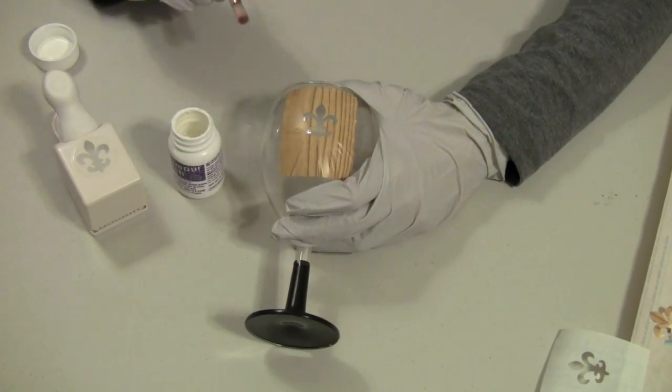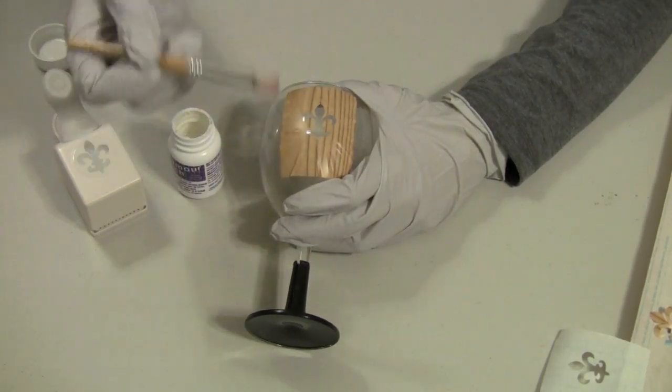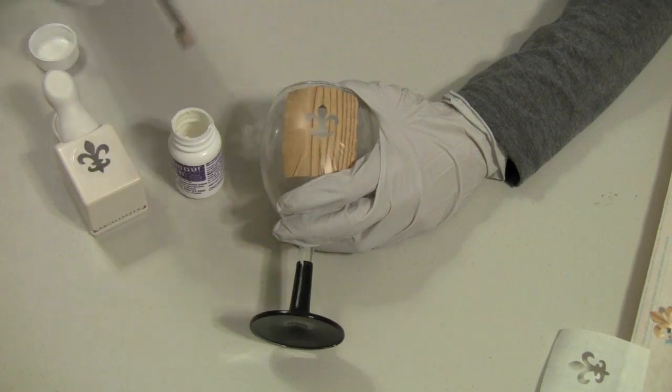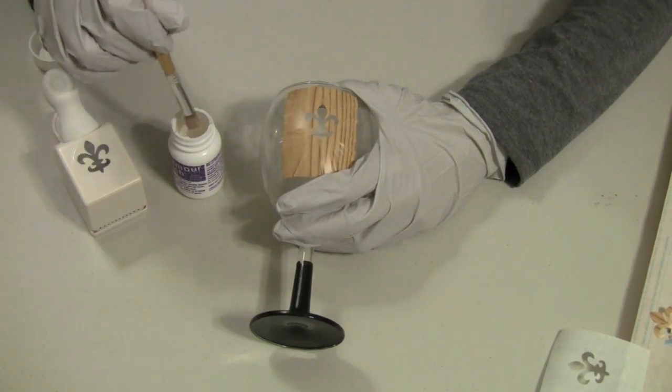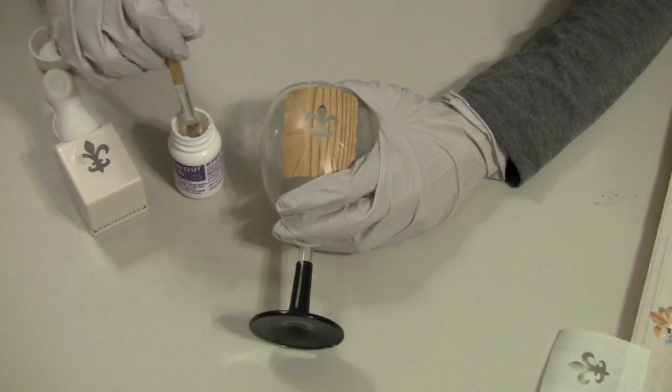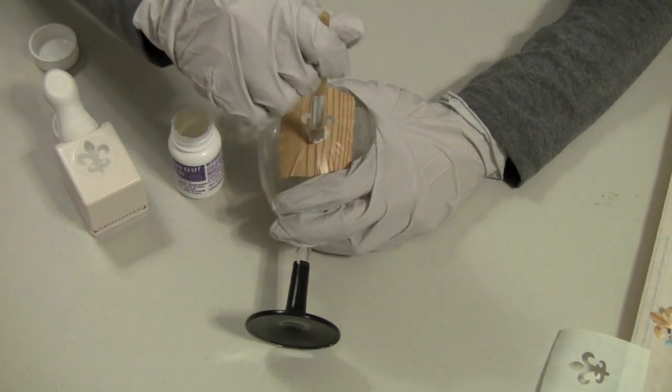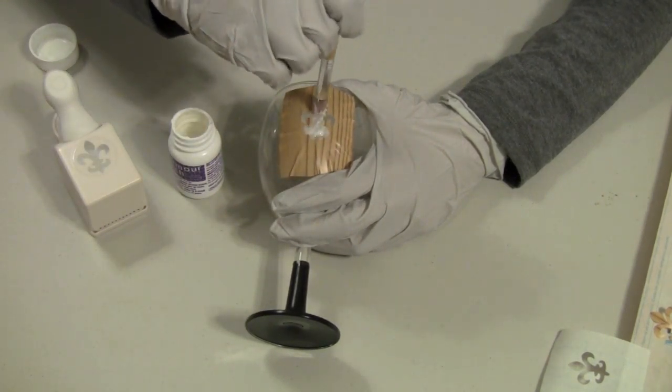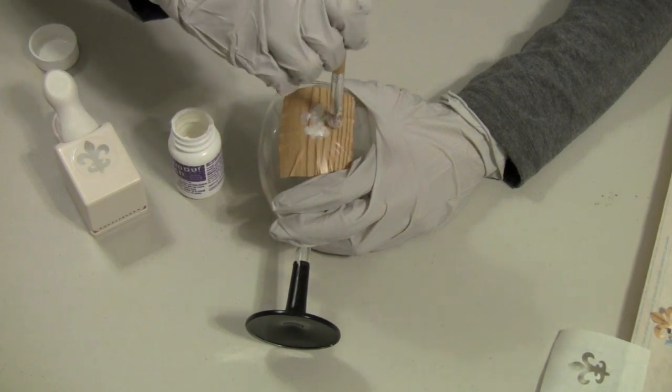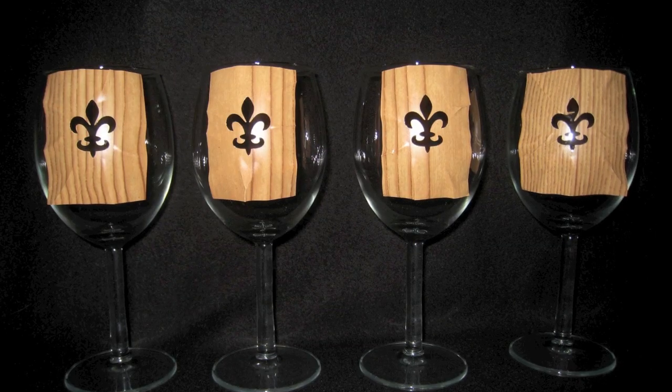In this step, we have our gloves on and we have our firm brush and we have our etching cream out. We will just start putting a good thick amount of etching cream all over our glass.